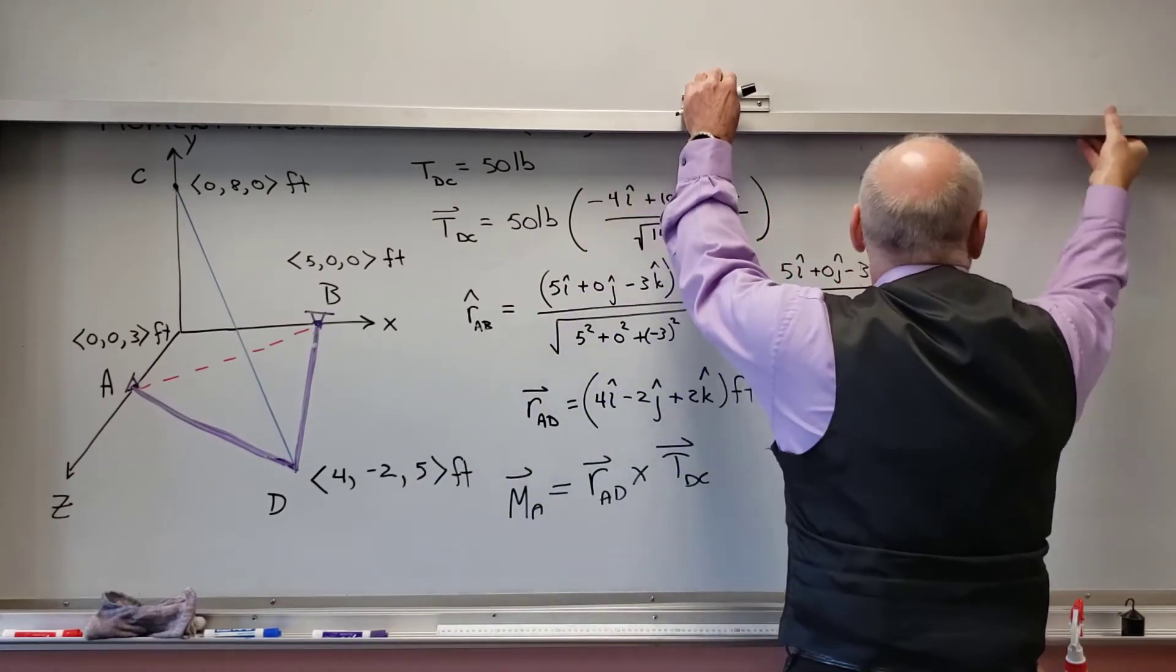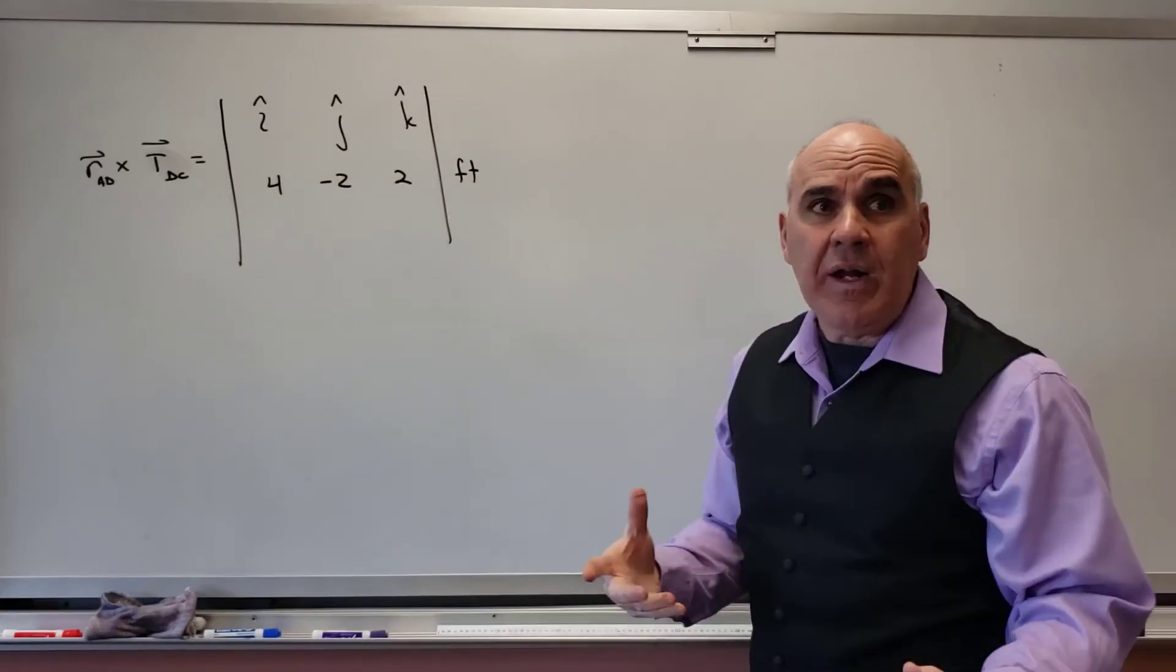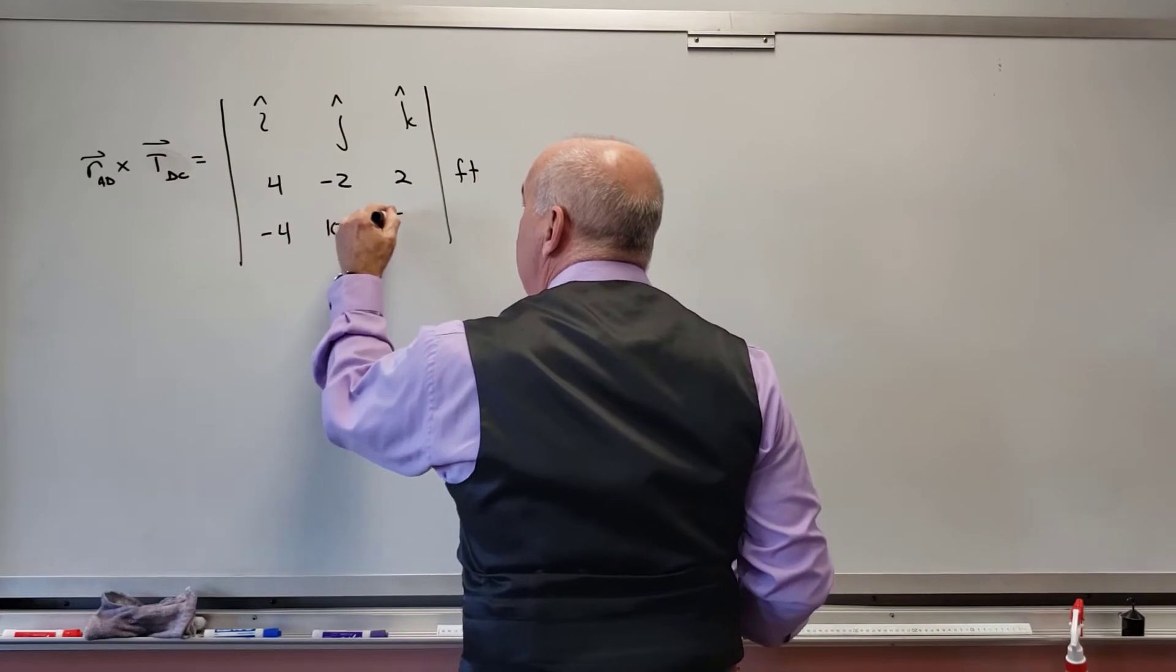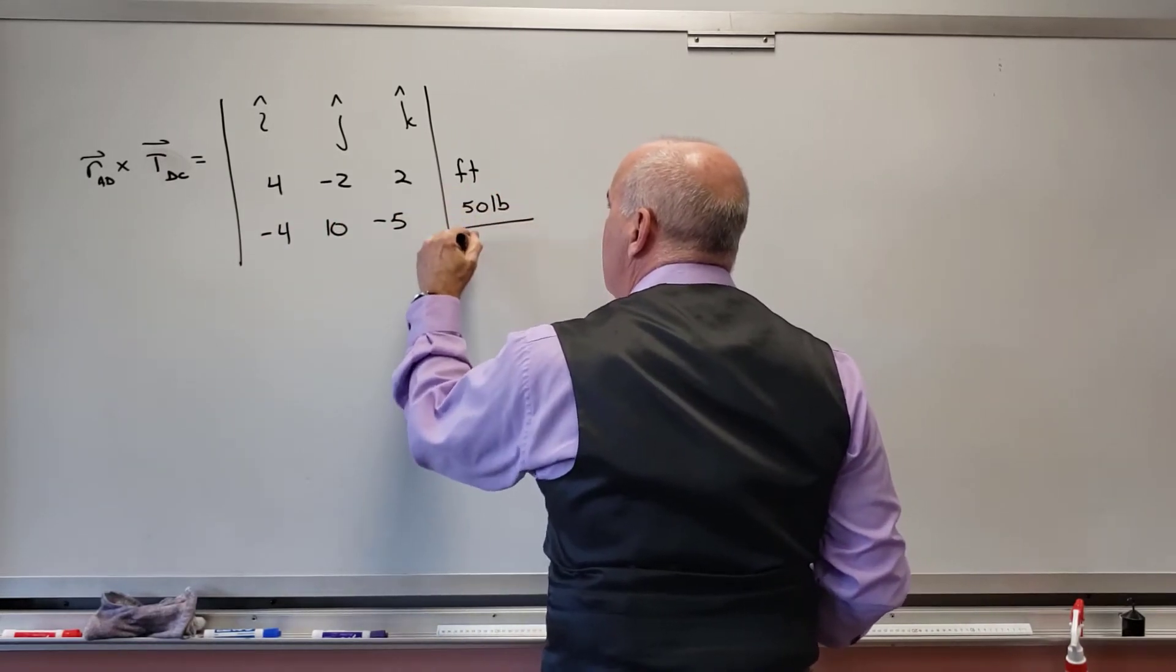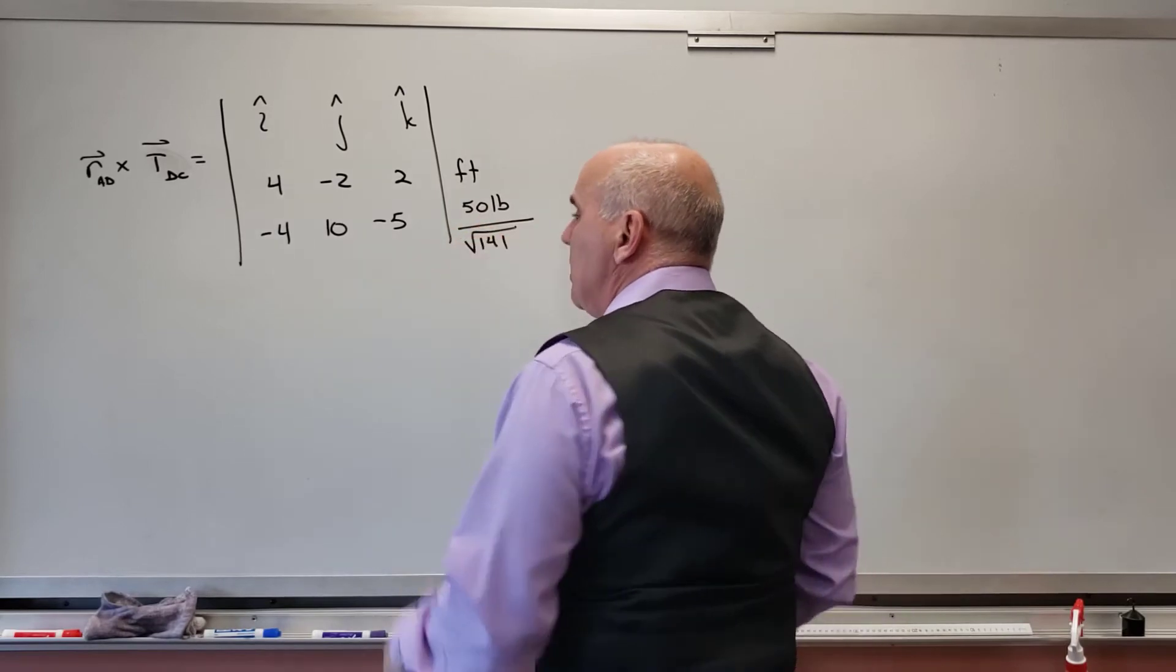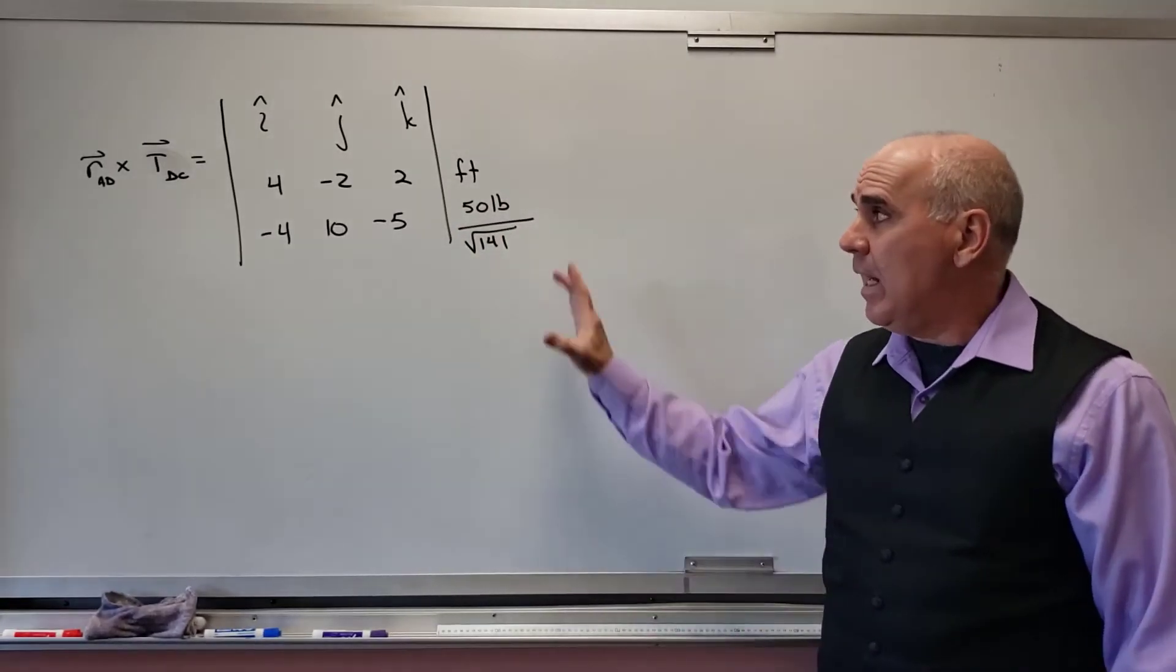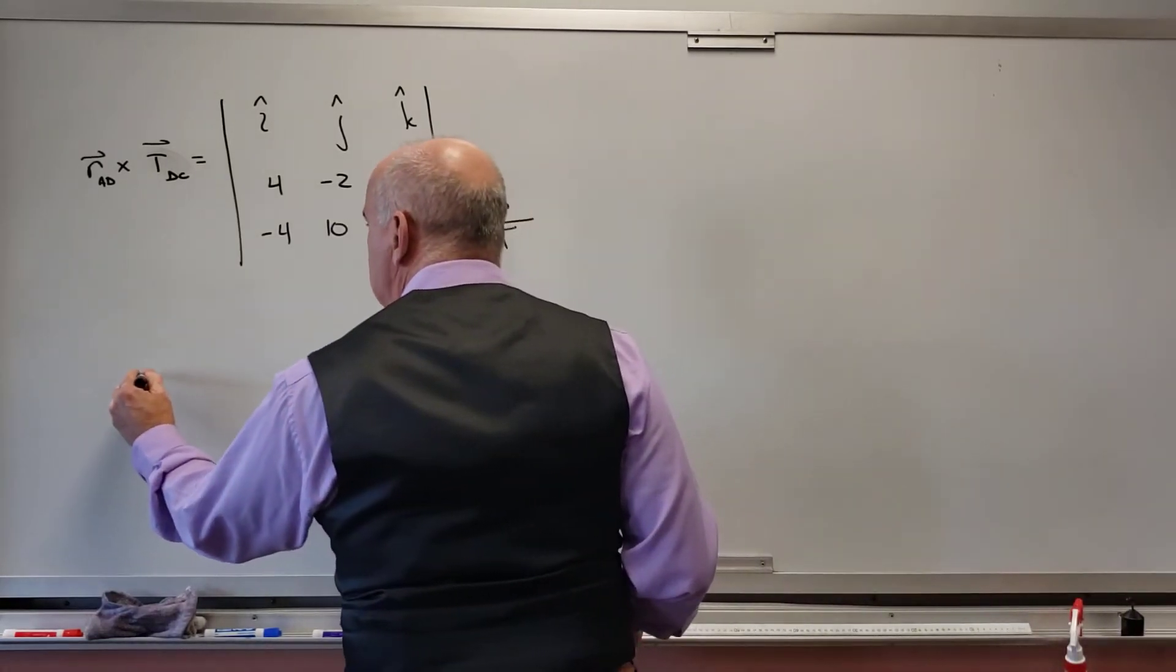The 50 pounds is in every term. The radical 141 is in every term. So I don't want to put those in there. I want to keep my line simple as far as the arithmetic goes. So I'm going to put -4, 10, -5, and then this is 50 pounds over the square root of 141. So that's all going to kind of sit on its own. So evaluate the determinant first.